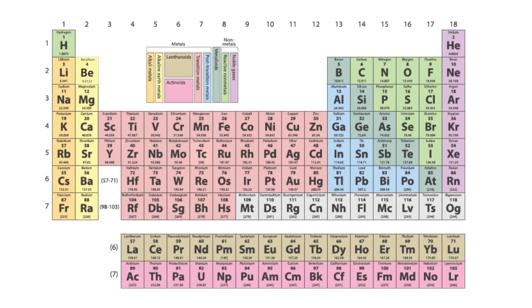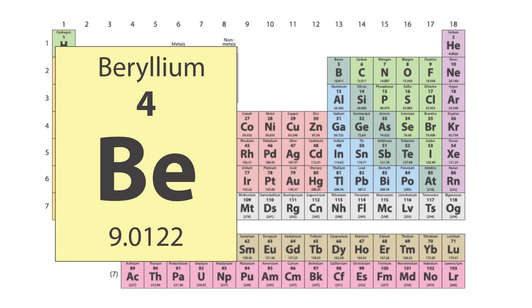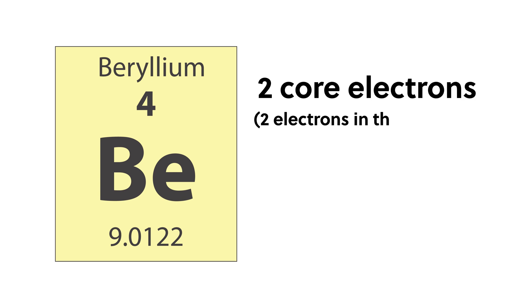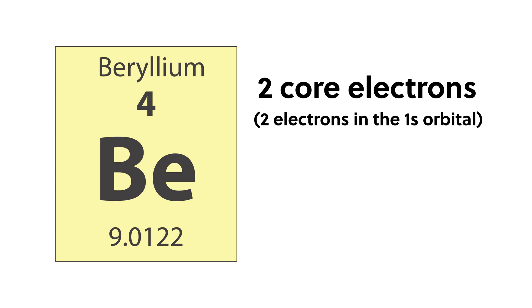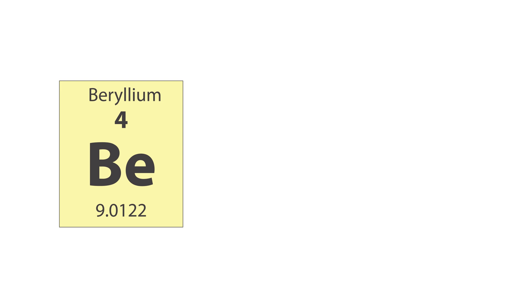If we consider the element beryllium, which is to the right of lithium on the periodic table, we see that it has an atomic number of 4, Z equals 4. As with lithium, beryllium has two core electrons in the 1s orbital. However, unlike lithium, beryllium has two valence electrons in the 2s orbital. To approximate ZF for the valence electrons using the number of core electrons, we have ZF equals 4 minus 2 equals 2. So beryllium has a higher effective nuclear charge than lithium.